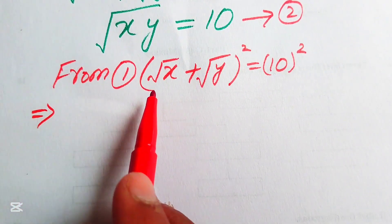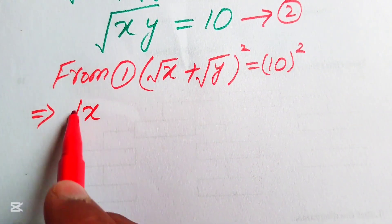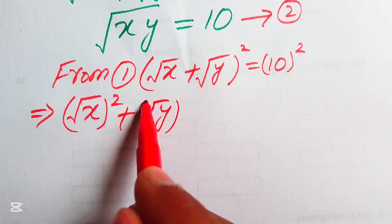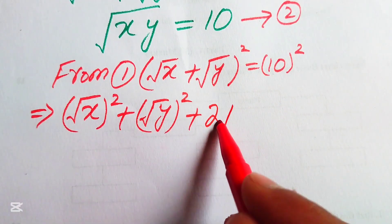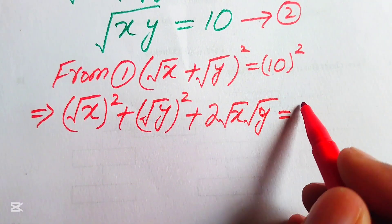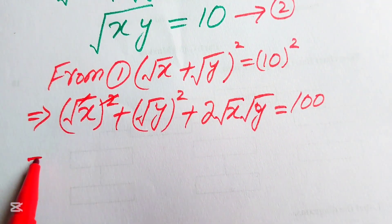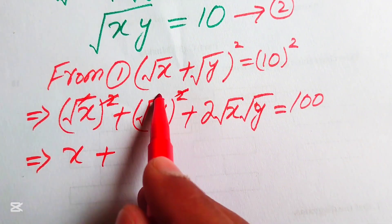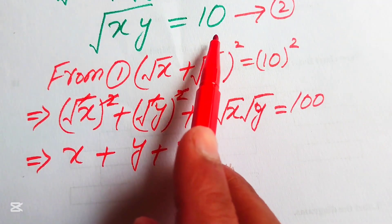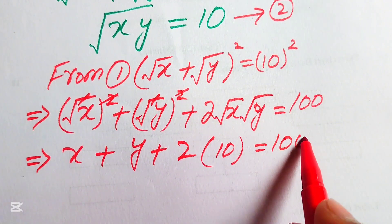In the next step we open the square identity. We get: square root of x squared, plus square root of y squared, plus 2 times the square root of x into the square root of y, equals 10 squared equals 100. The square roots cancel and we get x plus y plus 2 times square root of xy equals 100. From equation number 2, the square root of xy equals 10, so we substitute that.